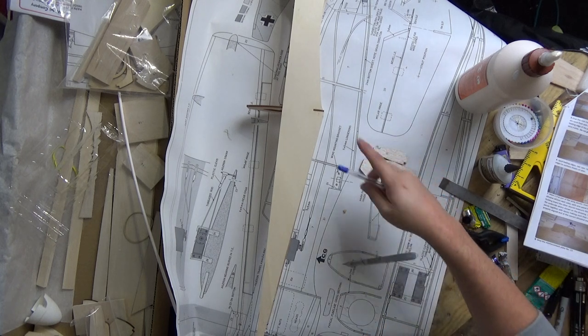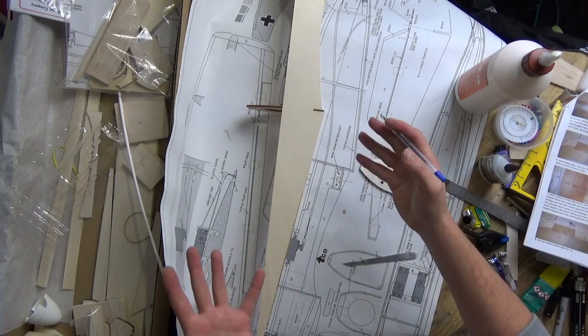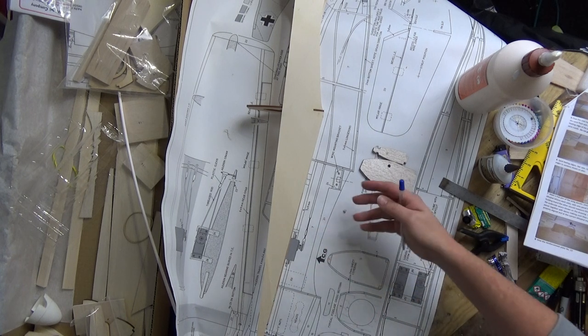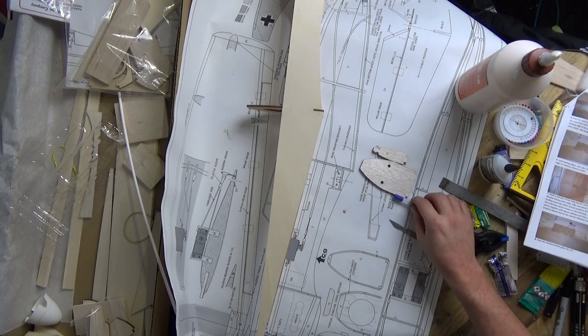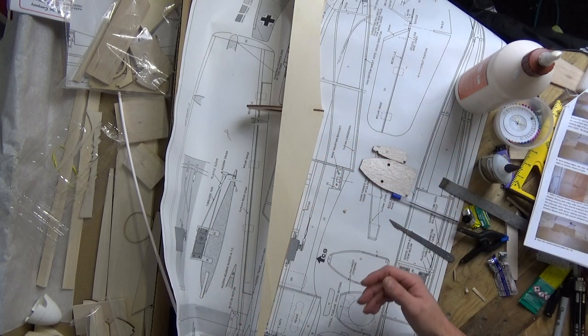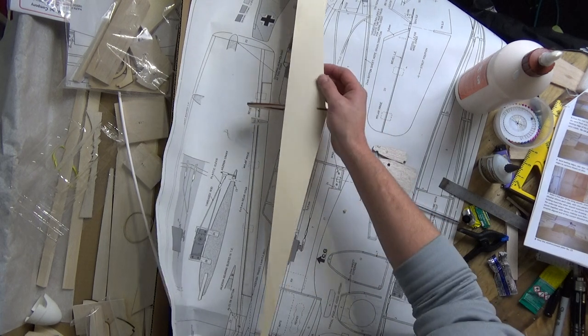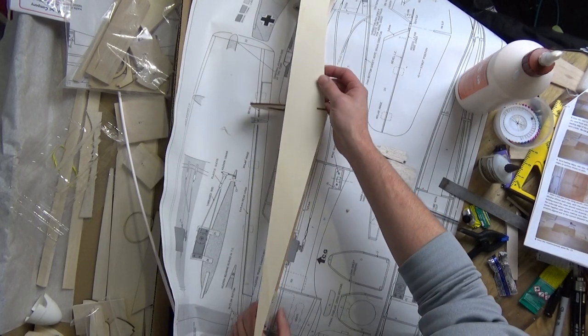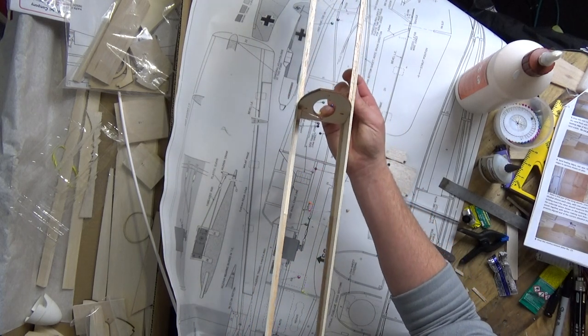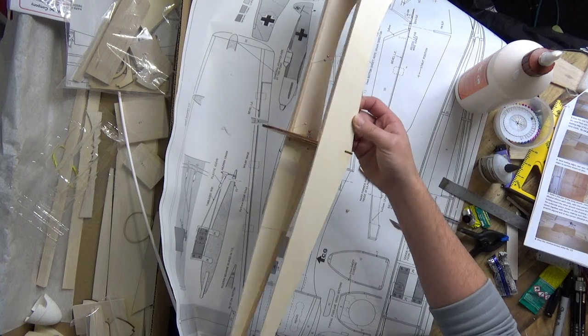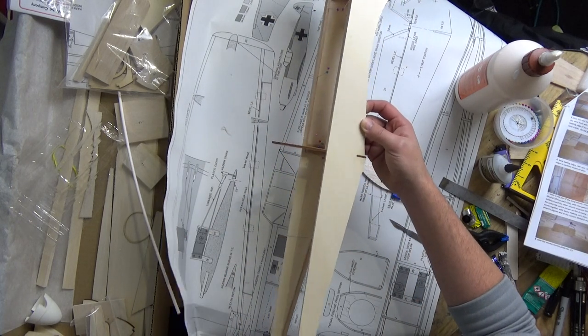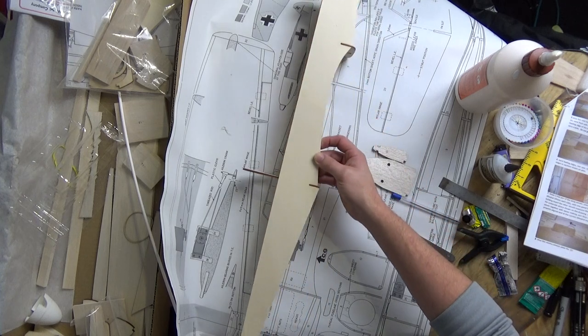I did make one proper screw up. I put a part in upside down because it is not obvious on the plans which way certain things need to be up. Never building a model like this before and not really seeing a built structure, I've got no real idea of what it should look like.